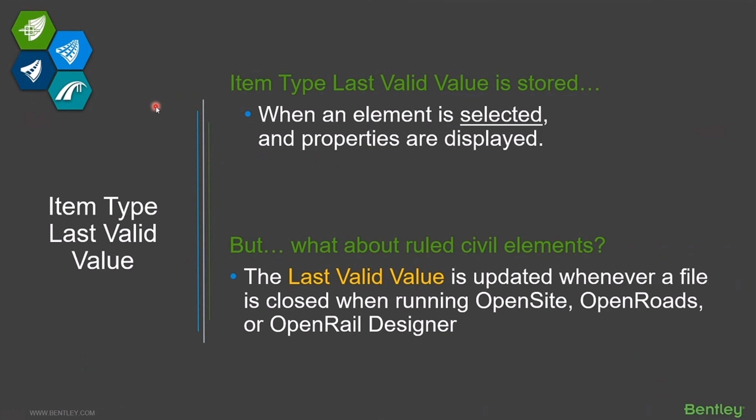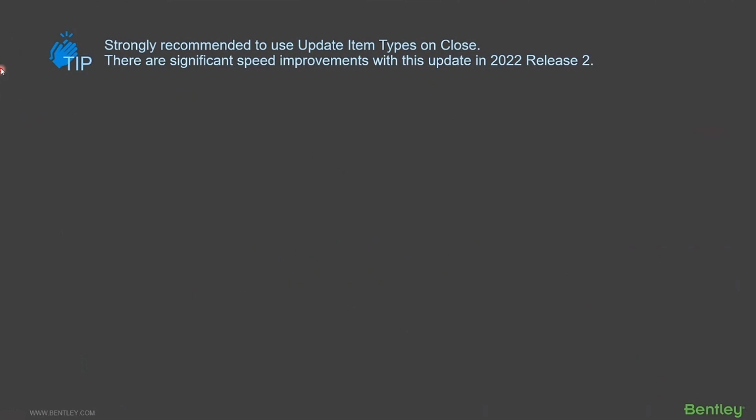So what have we done so that your data is not out of date? There is a process that runs when you close a file — it goes through every element in the file, even if you haven't touched it, and checks whether that item type is up to date. If it's not, it updates it. By the time you close the file, all of those last valid values are refreshed and up to date. That only happens if you're running OpenSite, OpenRoads, or OpenRail Designer.